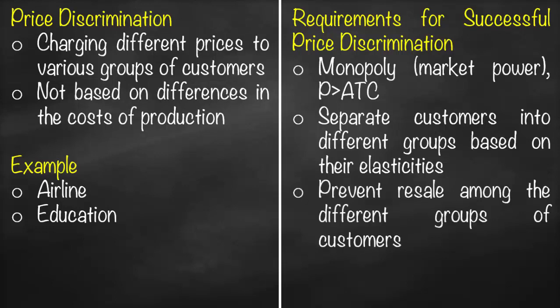The third factor is you need to prevent any member from one group to move to the other group. If you have these three factors, you could easily apply price discrimination. But let's assume that if you exist in perfect competition or monopolistic competition, can you apply price discrimination? No, you don't have market power.